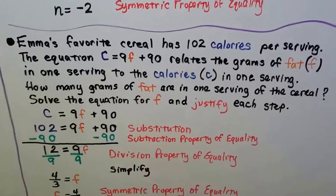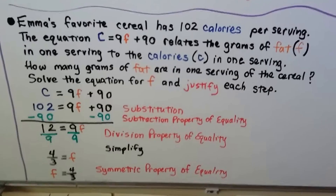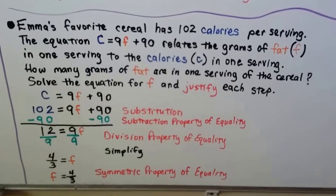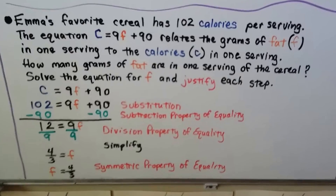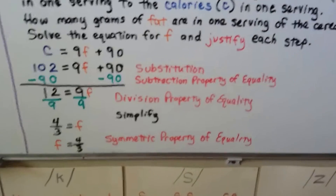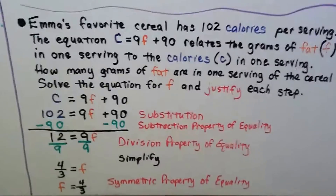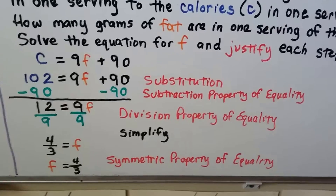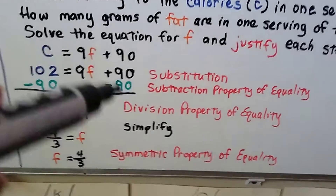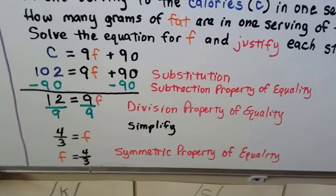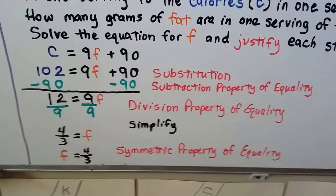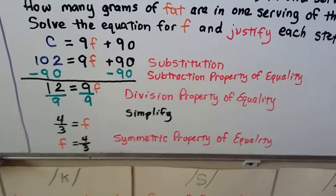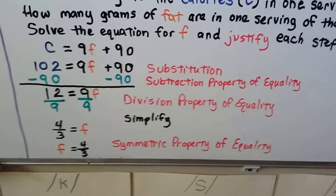Emma's favorite cereal has 102 calories per serving. The equation C equals 9F plus 90 relates the grams of fat F in one serving to the calories C. To find the grams of fat, we substitute C equals 102, giving 102 equals 9F plus 90. Using the subtraction property, subtract 90 from both sides to get 12 equals 9F. Then using the division property, divide both sides by 9 to get four-thirds equals F, and by the symmetric property, F equals four-thirds.